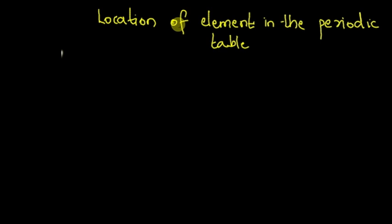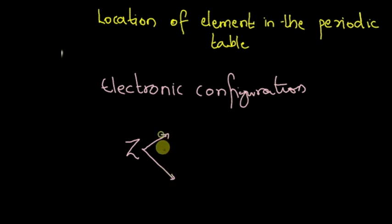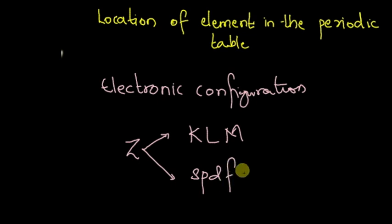In this video, we would discuss how to find the position of elements in the periodic table. In order to do that, we need to write the electronic configuration of elements. Once you know the atomic number of an element, you can start writing the electronic configuration. You can write in both forms — SPDF and KLMN. We will start writing in both forms so that you know how to go about it either way.